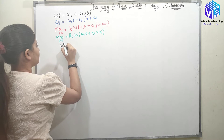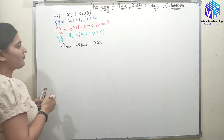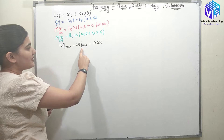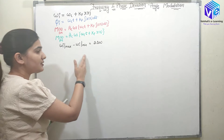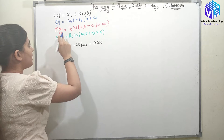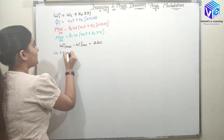To find the frequency deviation, I need to find the maximum value of instantaneous frequency minus the minimum value of instantaneous frequency, which equals twice the frequency deviation. The frequency deviation is in one direction only; if I consider both directions I will have twice delta omega. Now let's put the value of omega_i, which was omega_c plus k_f*x(t).